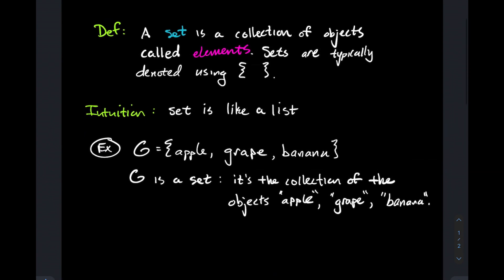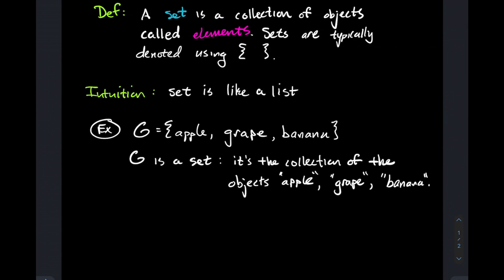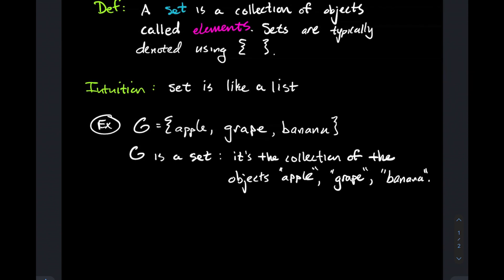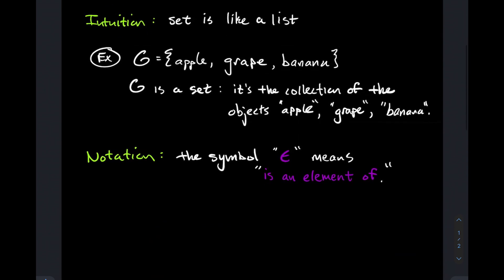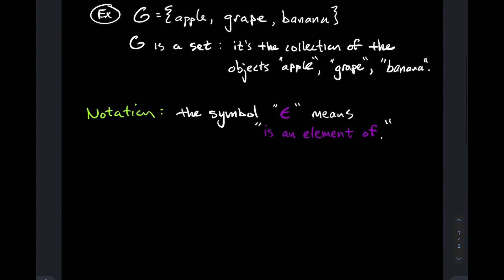It's a mouthful to tell somebody 'apple is an element of the set G.' Part of what makes mathematics cool is it gives us symbols to write these down quickly. Some notation here: the symbol ∈ means 'is an element of.' So we're going to encode this symbol ∈ with the phrase 'is an element of.' Anytime you see that, you're thinking 'is an element of' or some phrase synonymous with that.